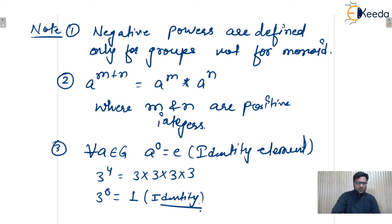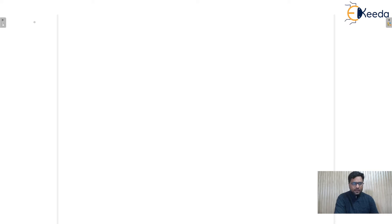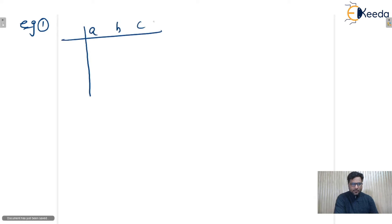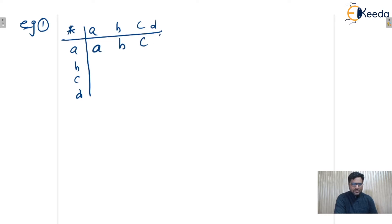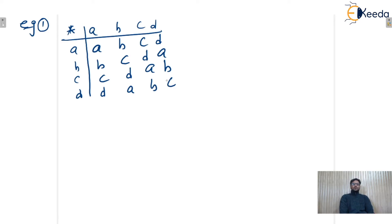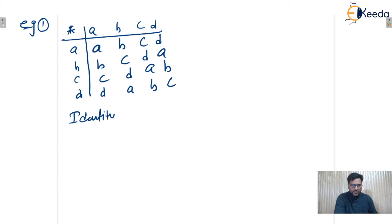Let us take an example. Consider the well-known Cayley table for a group with elements A, B, C, D — this is a standard example of an Abelian group, and all properties of an Abelian group are satisfied. Here the identity element is A.